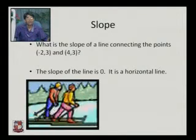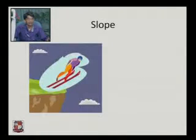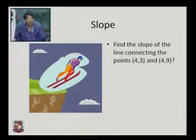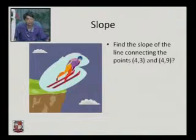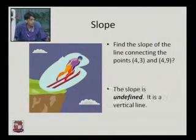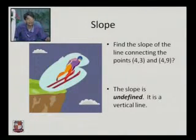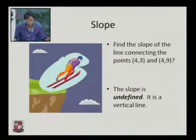If we discuss the slope of the line passing through points (4, 3) and (4, 9), here x2 is equal to x1, so if we want to find the slope it is undefined because x2 minus x1 is equal to 0, making the denominator 0. So this slope is undefined. When the slope is undefined, the line is a vertical line.